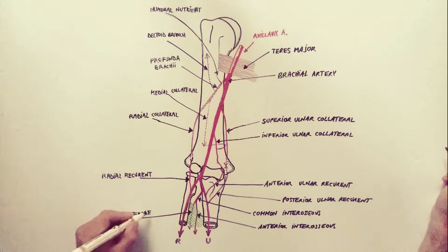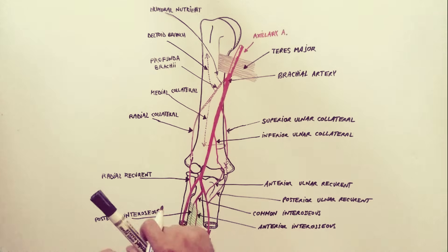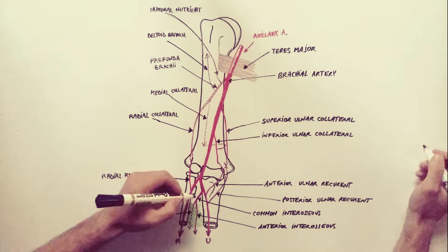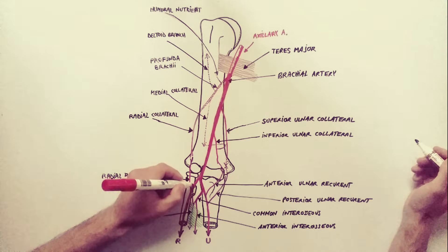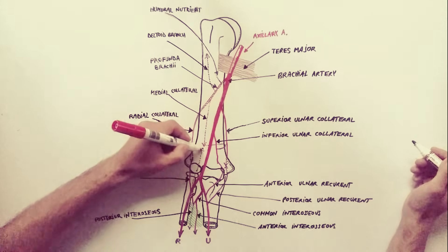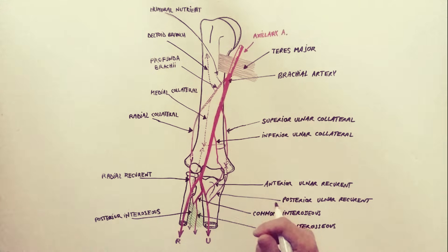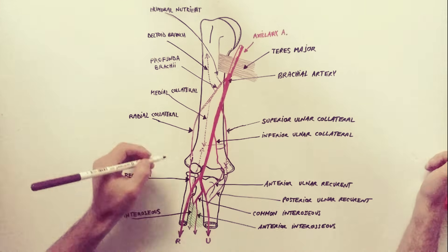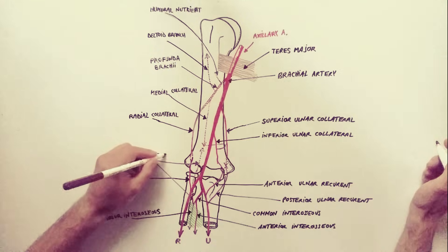The last artery to be indicated is the recurrent interosseous artery, originating from the posterior interosseous artery. This artery will anastomose behind the elbow joint with the medial collateral artery from the profunda brachii.